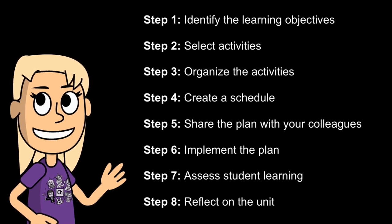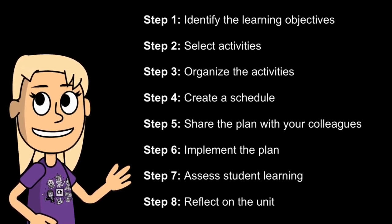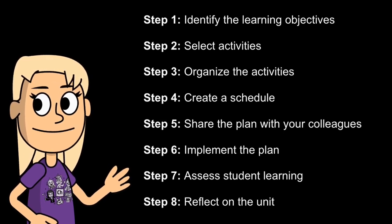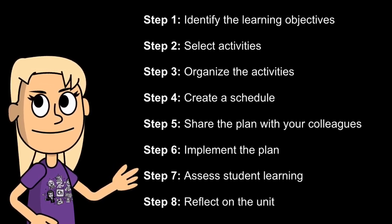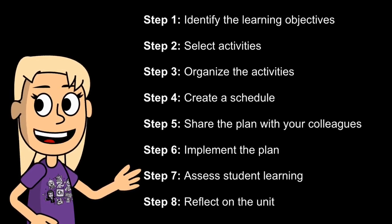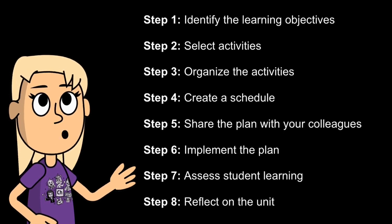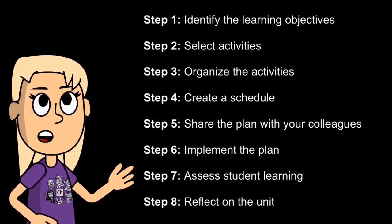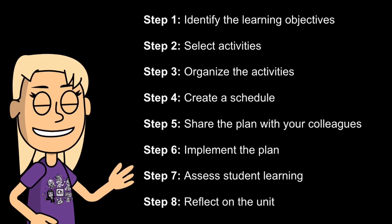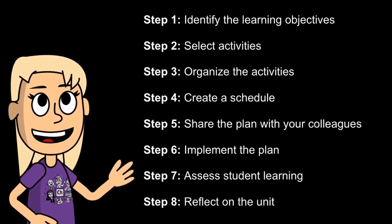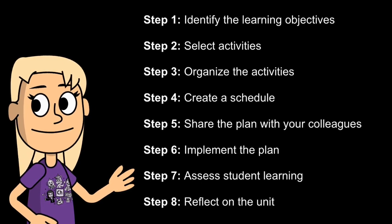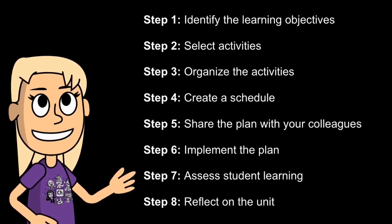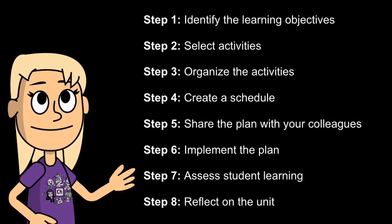Let's take a look at the collaborative unit planning for Bridges Number Corner together. Step one, identify the learning objectives. The first step is to identify the learning objectives for the unit. What do you want students to learn about numbers and number sense? Step two, select activities. Once you know the learning objectives, you can start selecting activities that will help students achieve these objectives. There are many different activities that you can use for number corners, such as counting, comparing, adding, subtracting, multiplying, dividing, using manipulatives, solving problems, and sharing thinking.